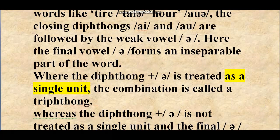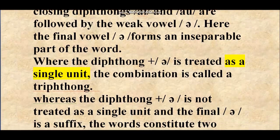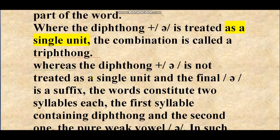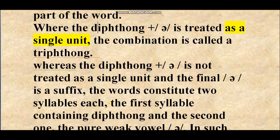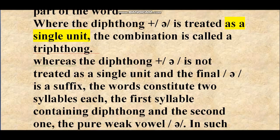When the diphthong plus /ə/ is not treated as a single unit and the final /ə/ is a suffix, the words constitute two syllables — the first syllable containing the diphthong and the second being the pure weak vowel /ə/. But if it is a triphthong, there is one syllable.